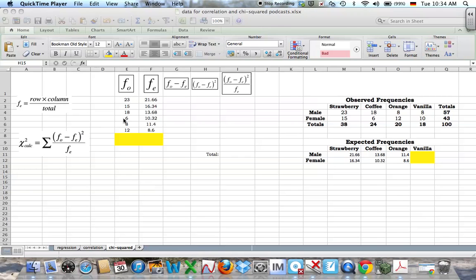So this podcast is just to help you quickly do the chi-squared working out using Excel to help you do all the long calculations.